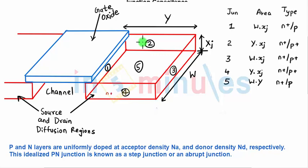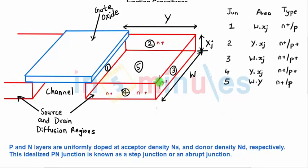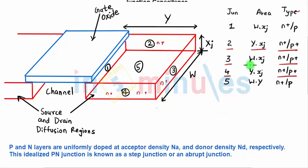The N-type diffusion region is surrounded by P-type substrate in 3D, with regions labeled 1 through 5 with their dimensions. Regions 2, 3, and 4 — which are N+ — are surrounded in 3D by a channel stop implant which is P+. Junctions 2, 3, and 4 are therefore N+/P+ type, with junction areas expressed as width × length, Y × XJ, or XJ × W, and so on.